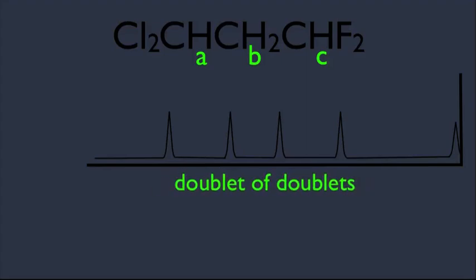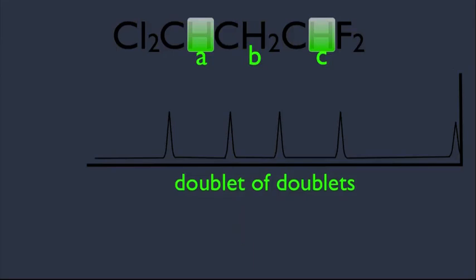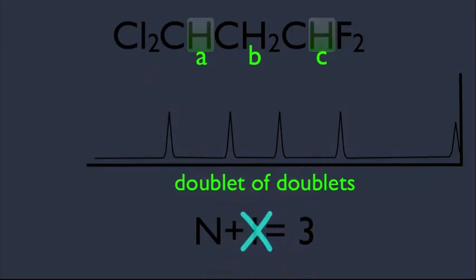Think about this: if you were to use the n+1 rule for B the old way, you'd look at its two neighbors, HA and HC, giving n equals 2, and 2+1 equals 3 — a triplet. But now that we drew our diagram, we see it's actually four peaks, a doublet of doublets. That is why the n+1 rule fails when the neighboring hydrogens are different.